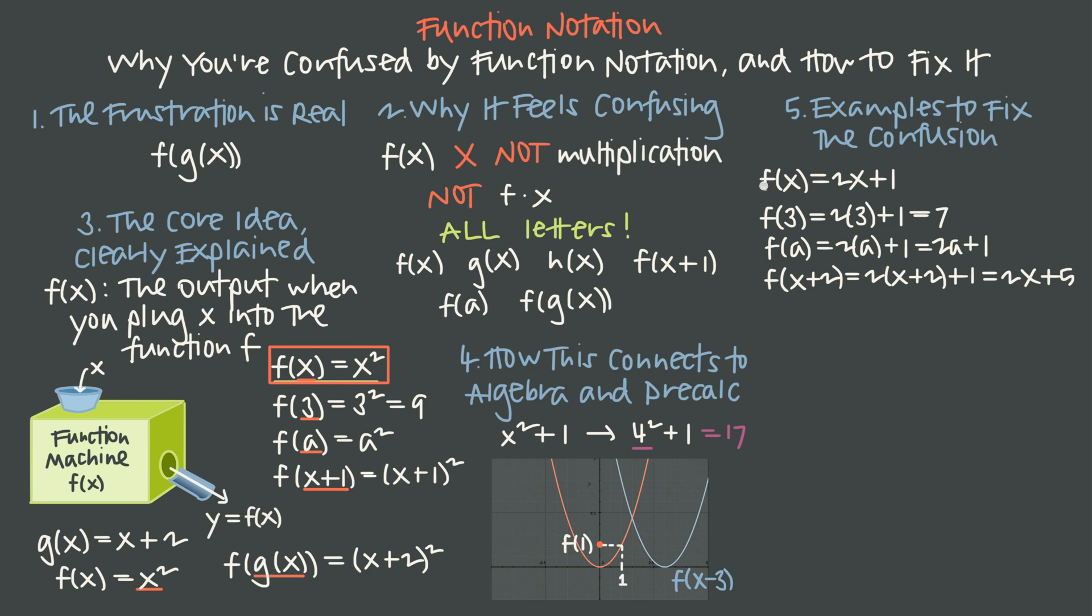And an input of x plus 2 gives us 2 times the quantity x plus 2 and then plus 1, which simplifies to 2x plus 5. In other words, this function machine for f takes any input x, doubles it, because we multiply here by 2, and then adds 1 to that result. So no matter what value we put into the function machine f, we take that value, we double it, and we add 1. Which is why an input of 3 gives an output of 7, an input of a gives an output of 2a plus 1, and an input of x plus 2 gives an output of 2x plus 5.